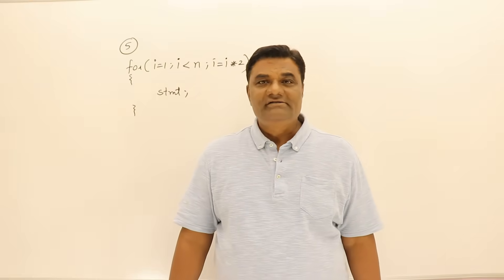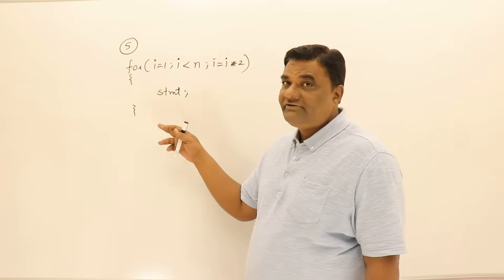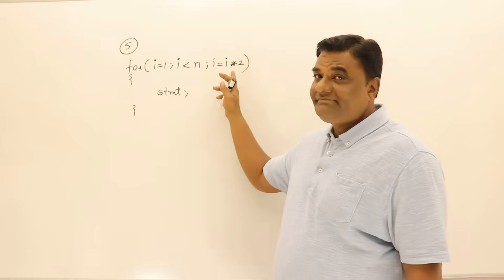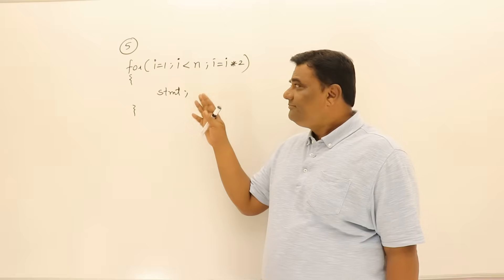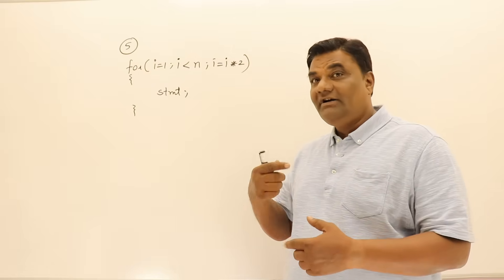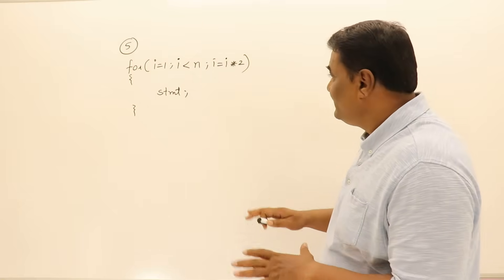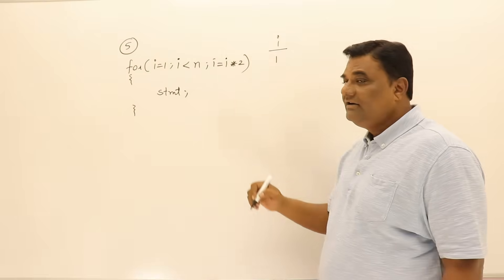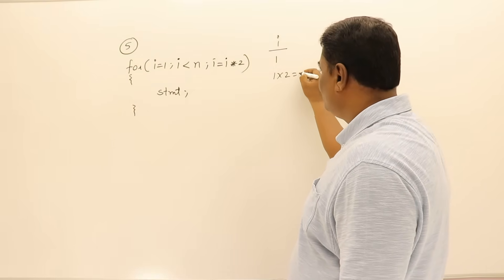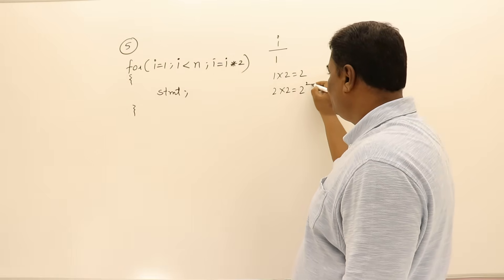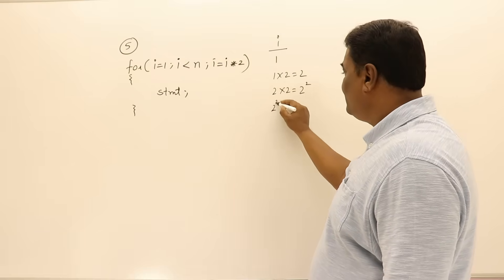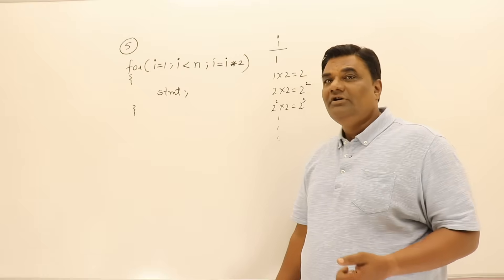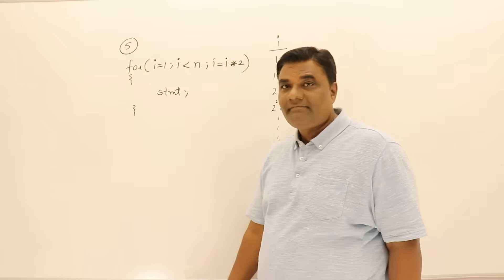Here I have a piece of code to analyze for time complexity. A for loop is used, starting from 1 and going up to n, but i is multiplied by 2 every time. So we cannot blindly say this will execute n times. Let us trace the i values: initially 1, then 2, then 2 squared, then 2 cubed — every time it's getting multiplied by 2. So let us say this will execute for 2 power k times.